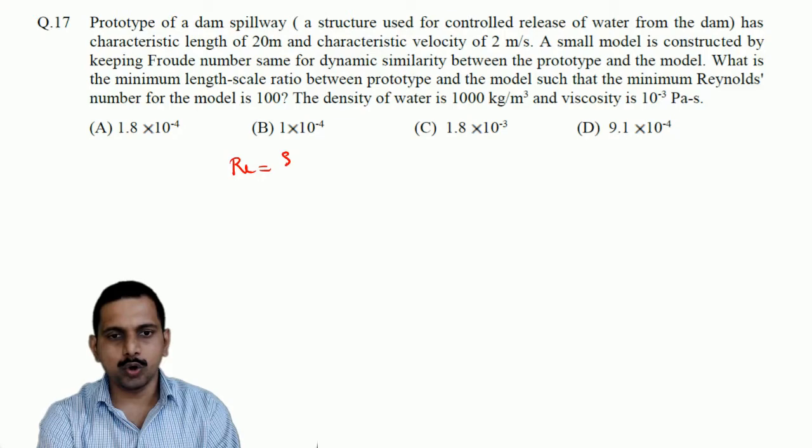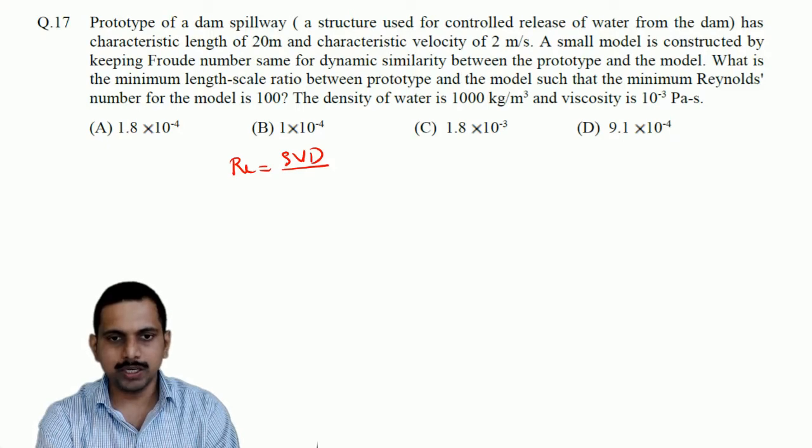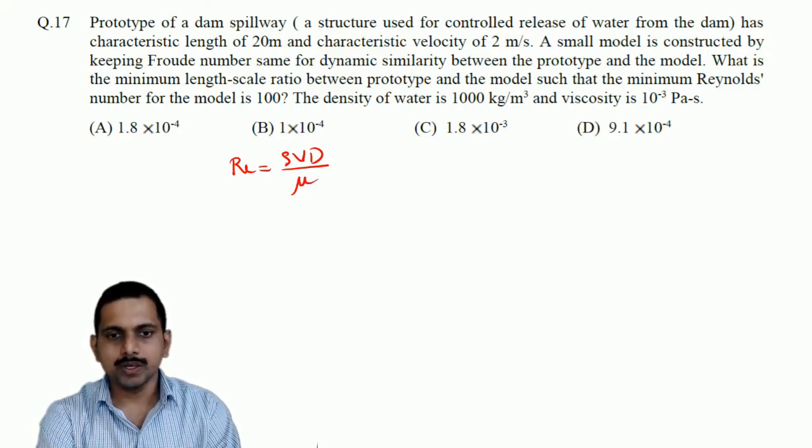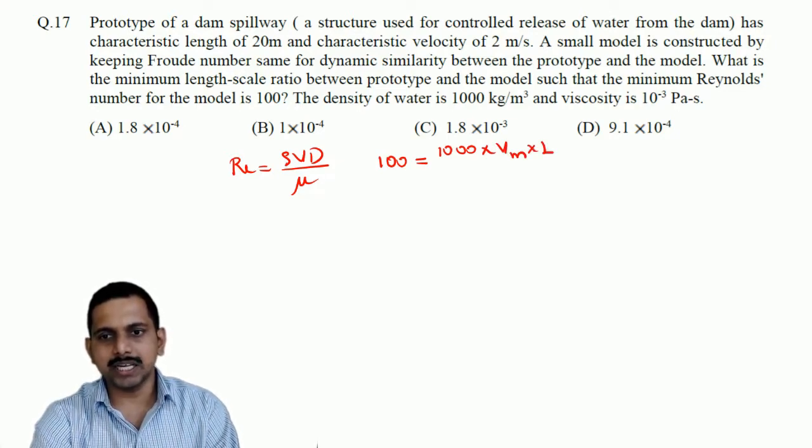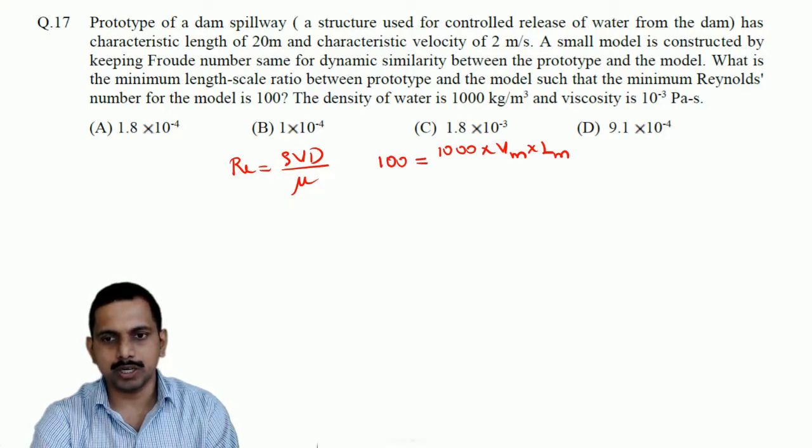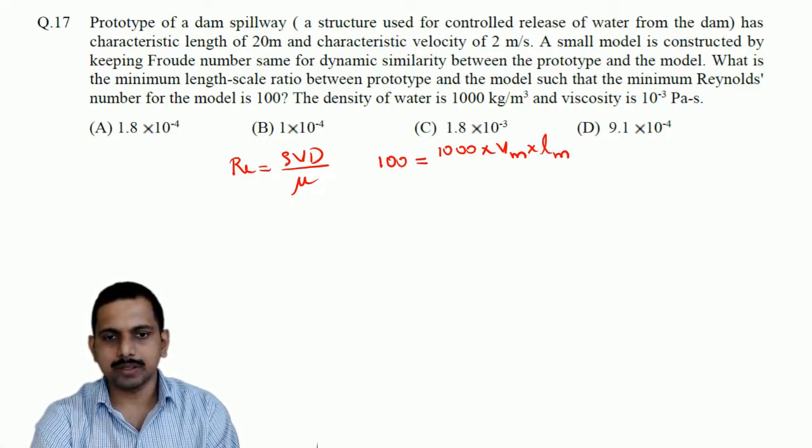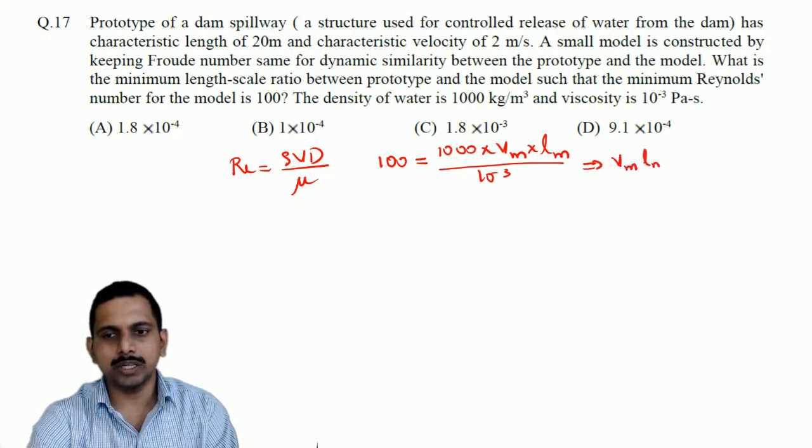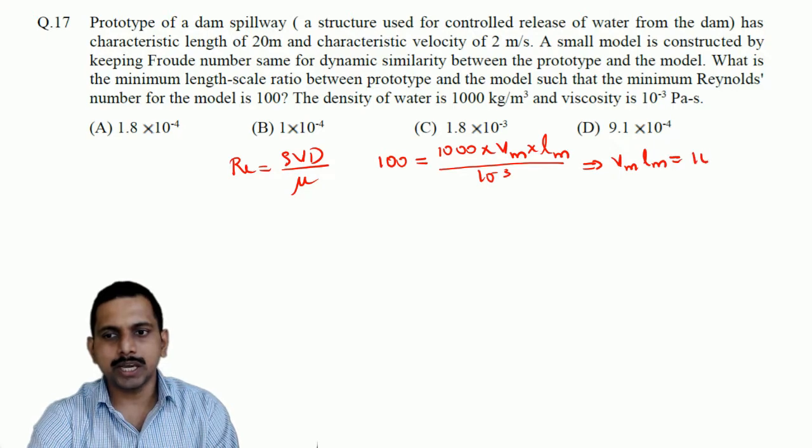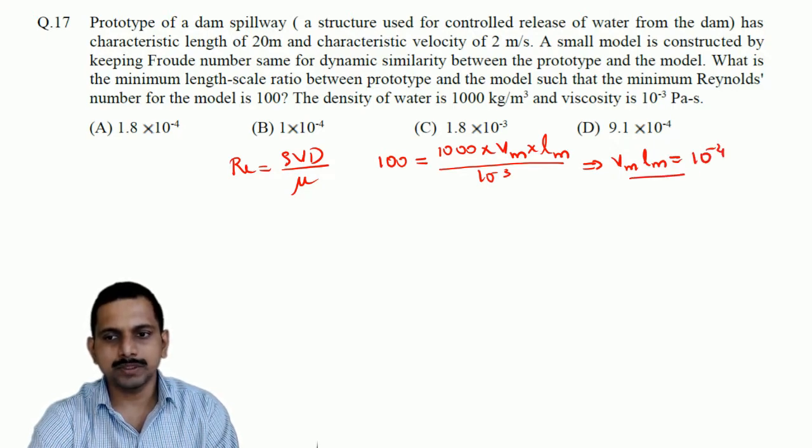Reynolds number is rho V D by mu. D is the characteristic length, or you can use L also. So, here that is restricted to 100. That means 100 should be density is 1000 into velocity, that is V of the model, into characteristic length of the model. I will use small L M divided by mu. What is mu here? Mu is given as 10 power minus 3. This gives us velocity of the model into length of the model should be equal to 10 power minus 4. This is the restriction we get.